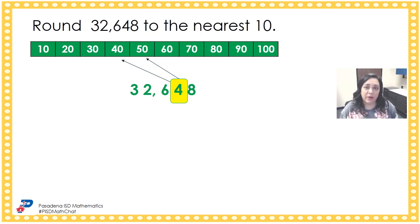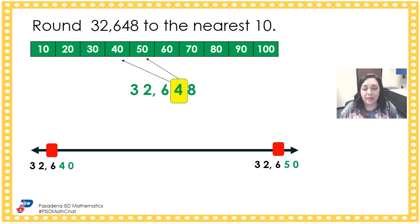Now we're not going to round 48, so we have to put the whole number using consecutive multiples of 10 on a number line. Here we have 32,640 and 32,650. Now we have to imagine the points on the number line so that we can place 32,648 in a location that makes sense.